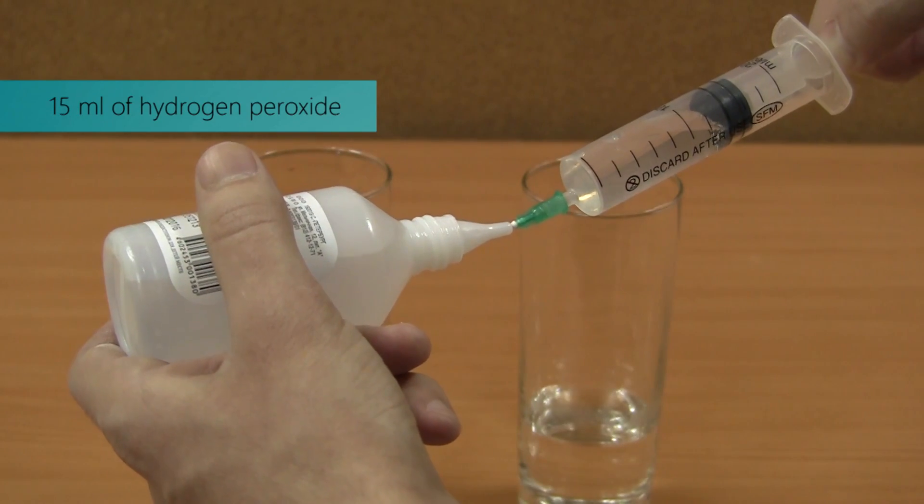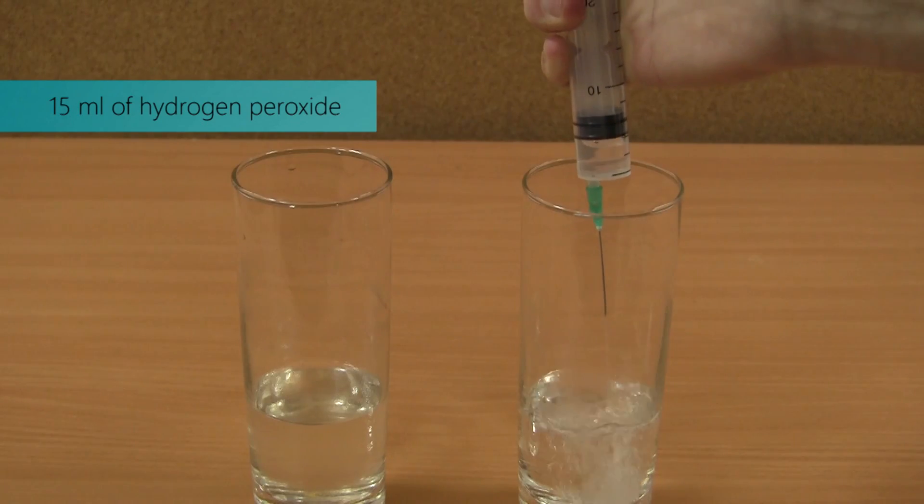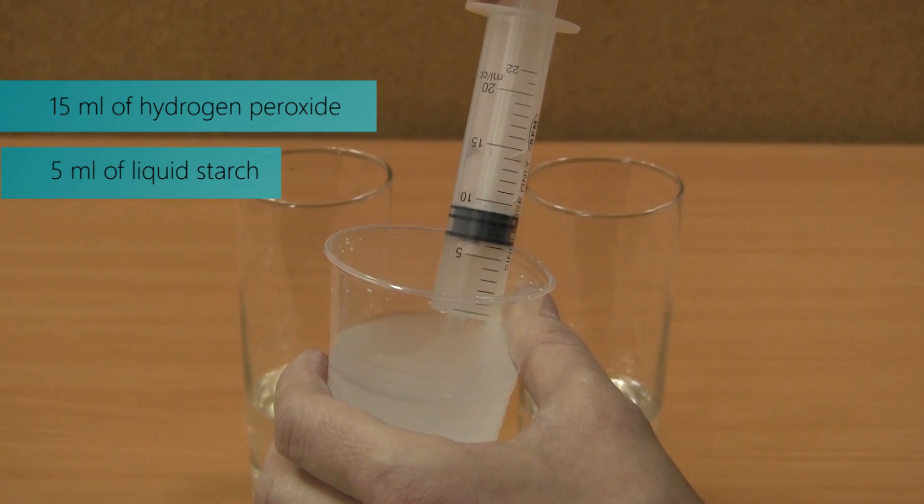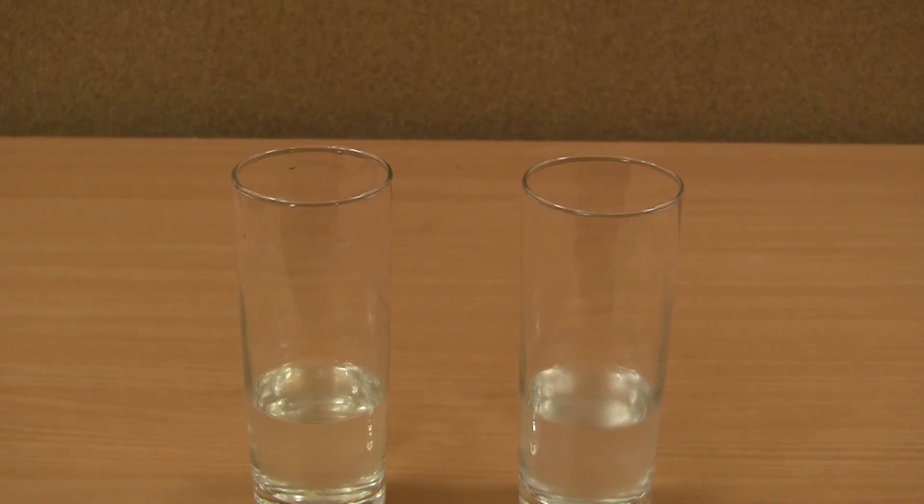In a second glass mix 15 ml of hydrogen peroxide and 5 ml of liquid starch. Preparation is over. Time to move on to the fun part.